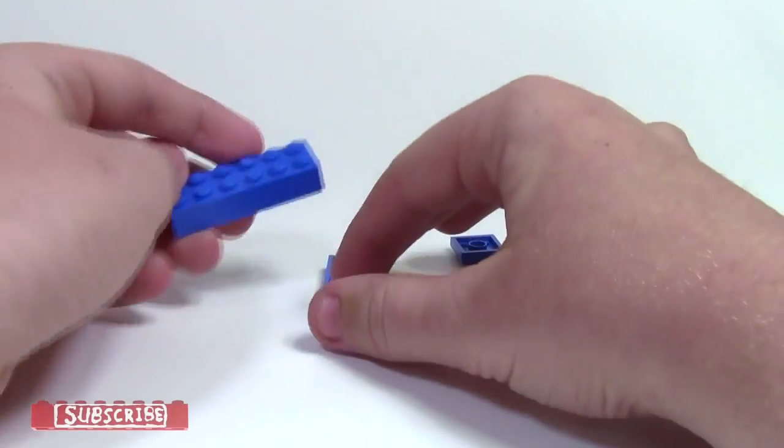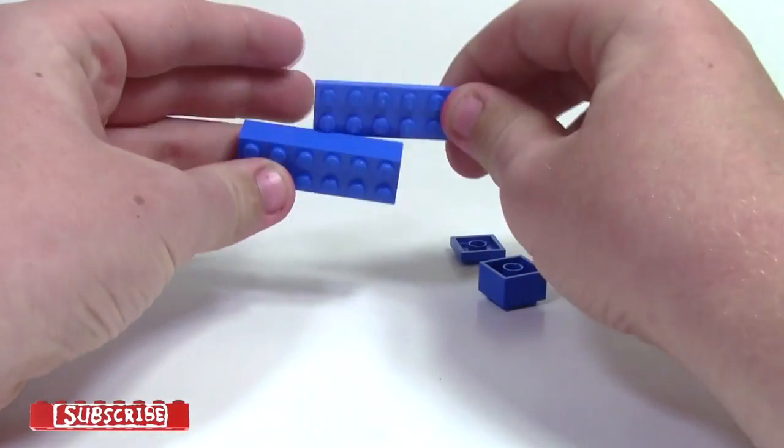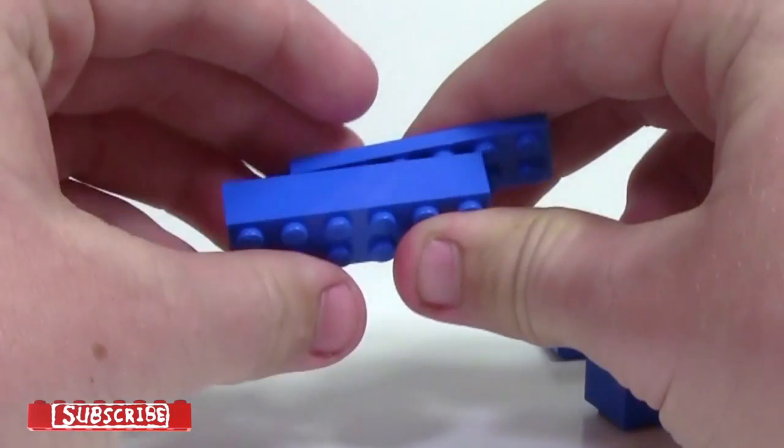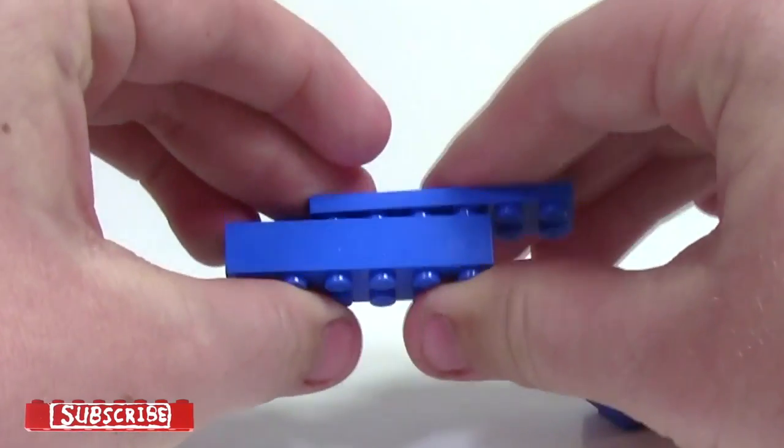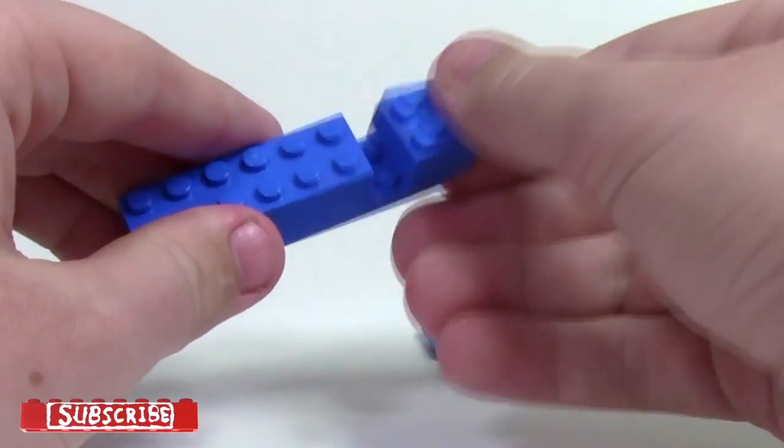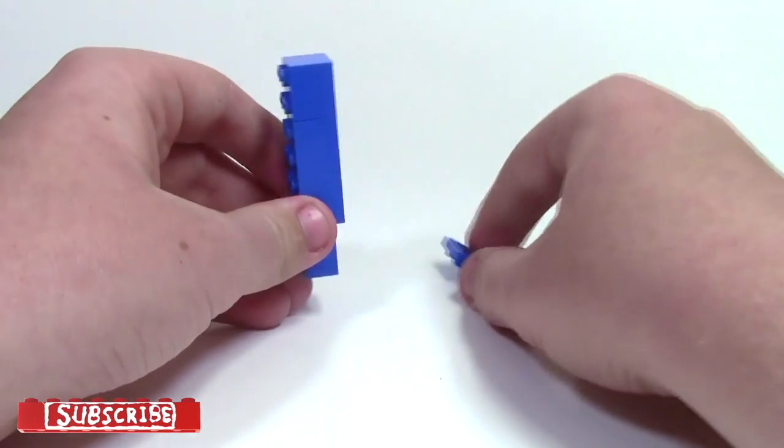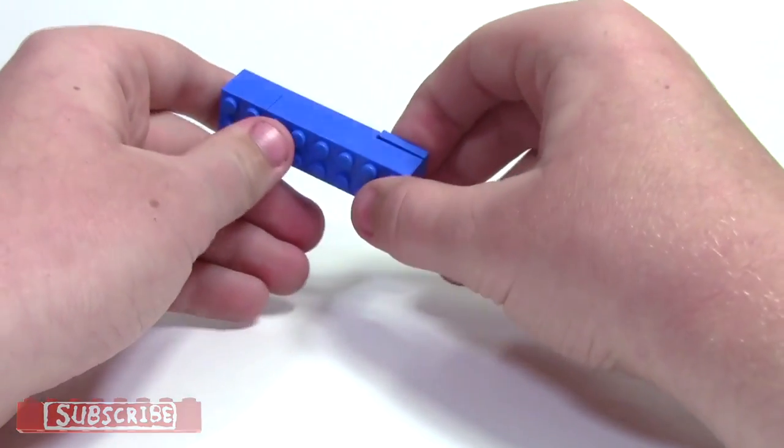To make the first part of the contraption, what you're going to need to do is take your 2x6 plate as well as your 2x6 brick and stack them on top of each other, leaving two studs on each side. Next, you're going to take your 2x2 brick, put it here, and your 2x2 plate and put it here.